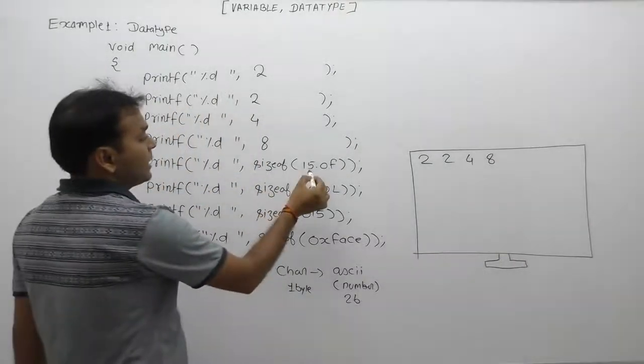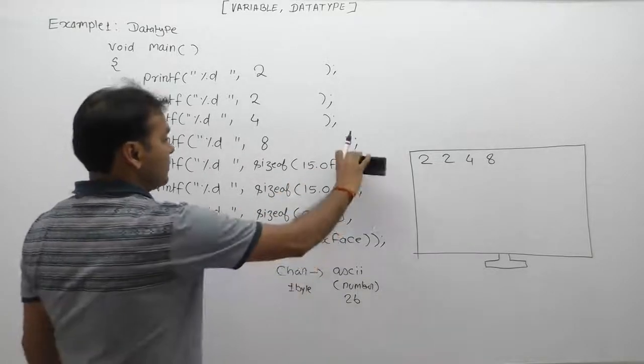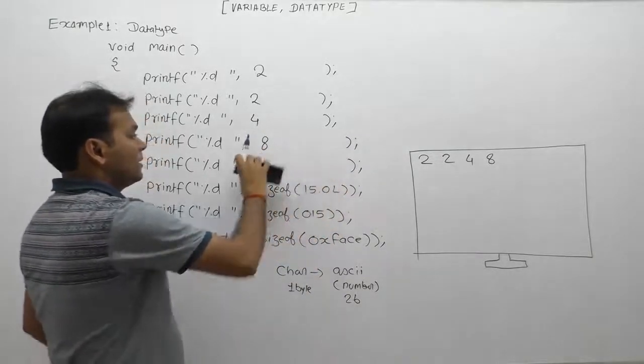Next, sizeof 15.0f. The 'f' means float type literal. Size of float literal is 4 bytes. It requires 4 bytes in computer memory, therefore the displayed value is 4.